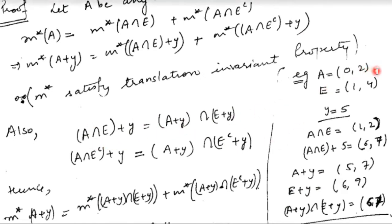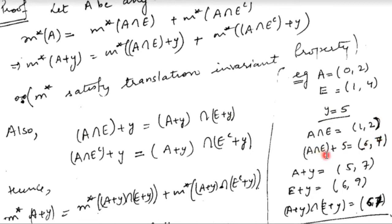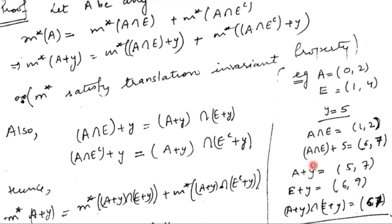Let's verify with an example. Let A = (0, 2) and E = (1, 4), so A intersection E = (1, 2). With y = 5, (A intersection E) plus 5 = (6, 7). On the right-hand side, A plus y = (5, 7) and E plus y = (6, 9), and their intersection is (6, 7), which matches. So we can write (A intersection E) plus y = (A plus y) intersection (E plus y), and similarly for the complement.